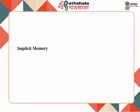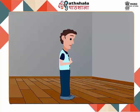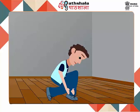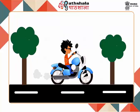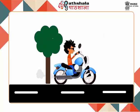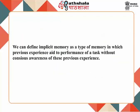Now let us understand implicit memory. John is going to school, so he has to button his shirt and tie his shoelace. Both these activities he does without trying to remember how to do them. Another example of implicit memory is riding a bike. Implicit memory can be defined as a type of memory in which previous experiences aid the performance of a task without conscious awareness of those previous experiences.